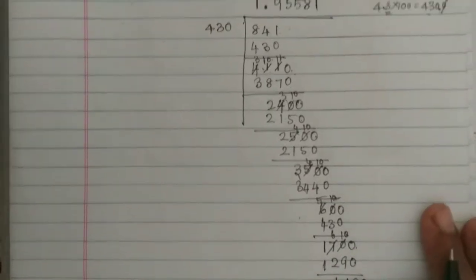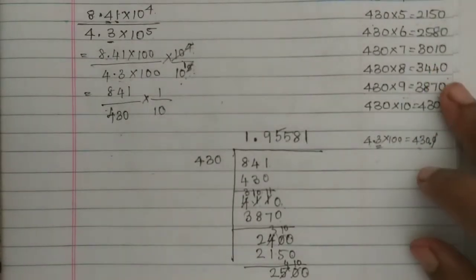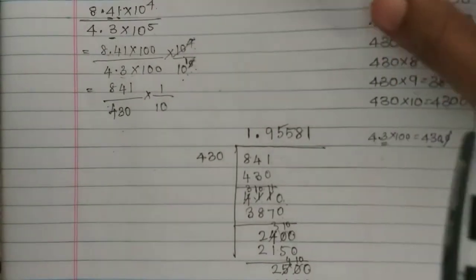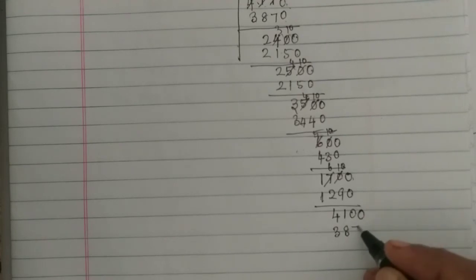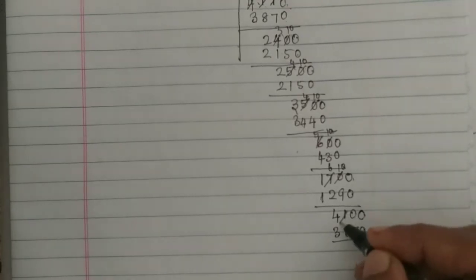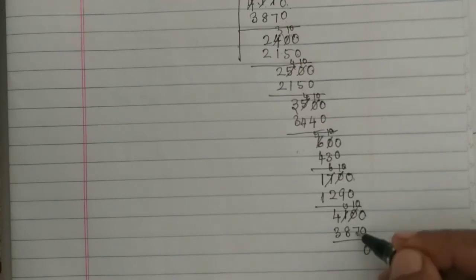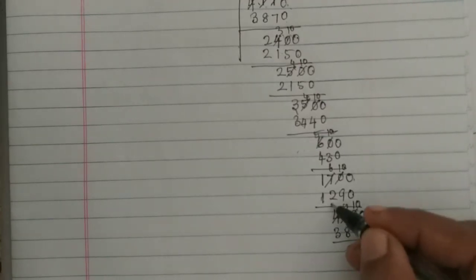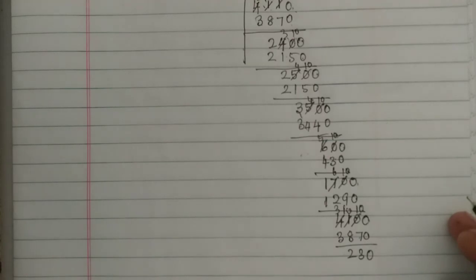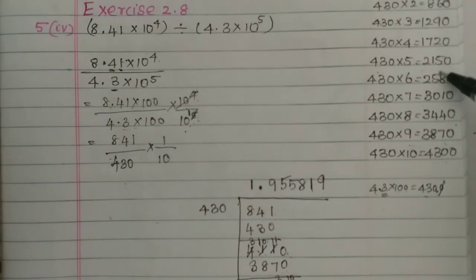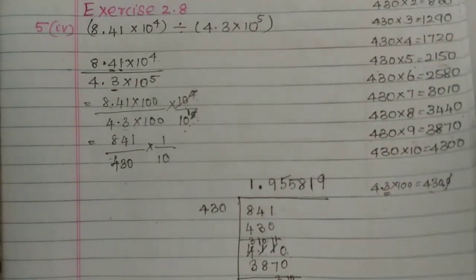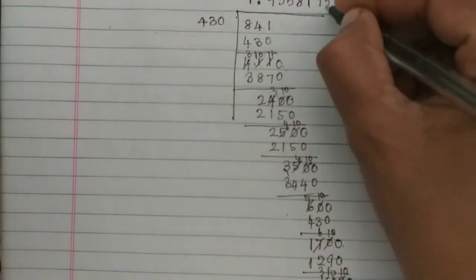3 times 1290: 0 minus 0 is 0, 10 minus 9 is 1, 6 minus 2 is 4 — remainder is 410. Bring down 0 to get 4100. 9 times 430 is 3870. 0 minus 0 is 0, 10 minus 7 is 3, 10 minus 8 is 2 — remainder is 230. Bring down 0 to get 2300. 5 times 430 is 2150.